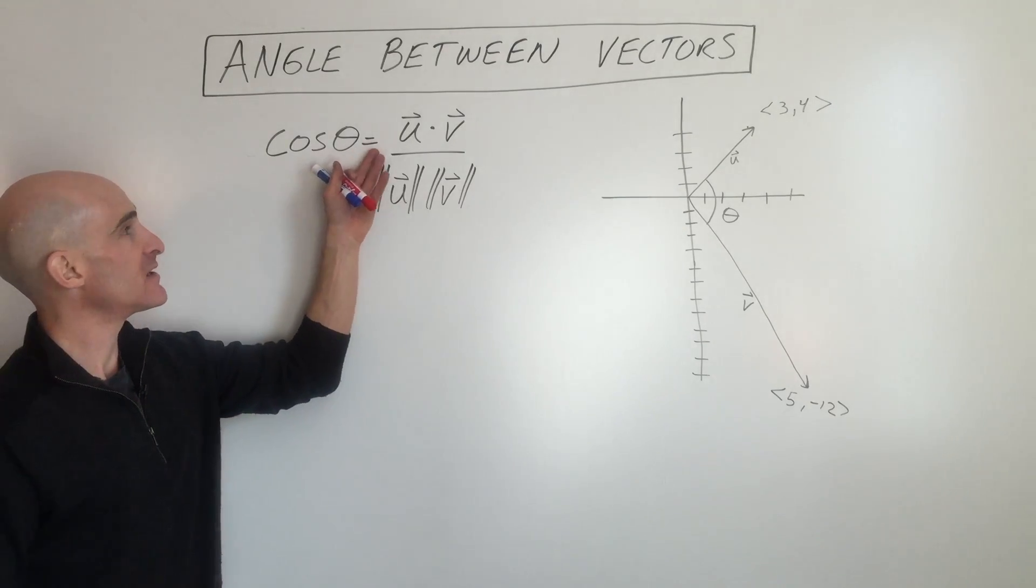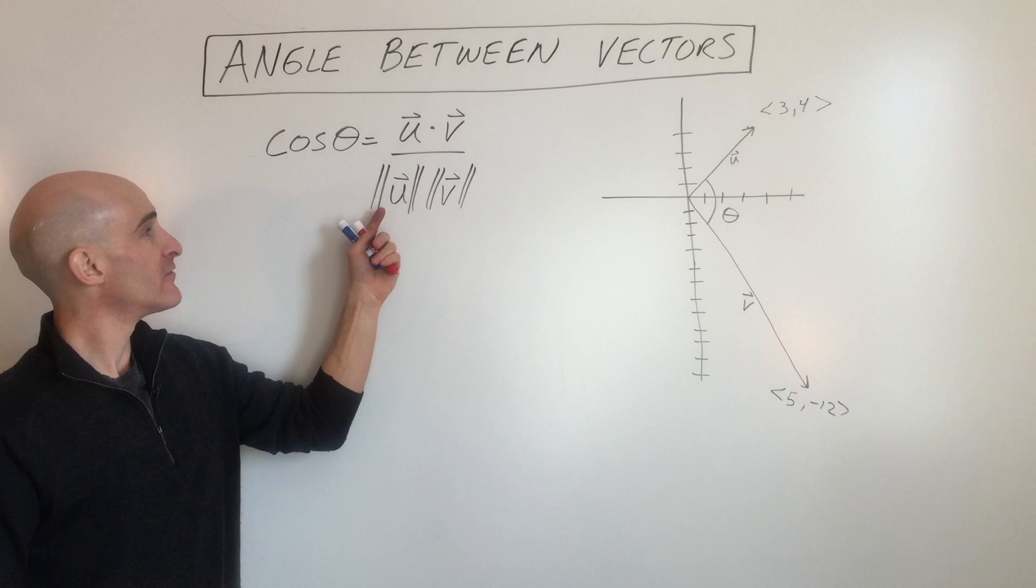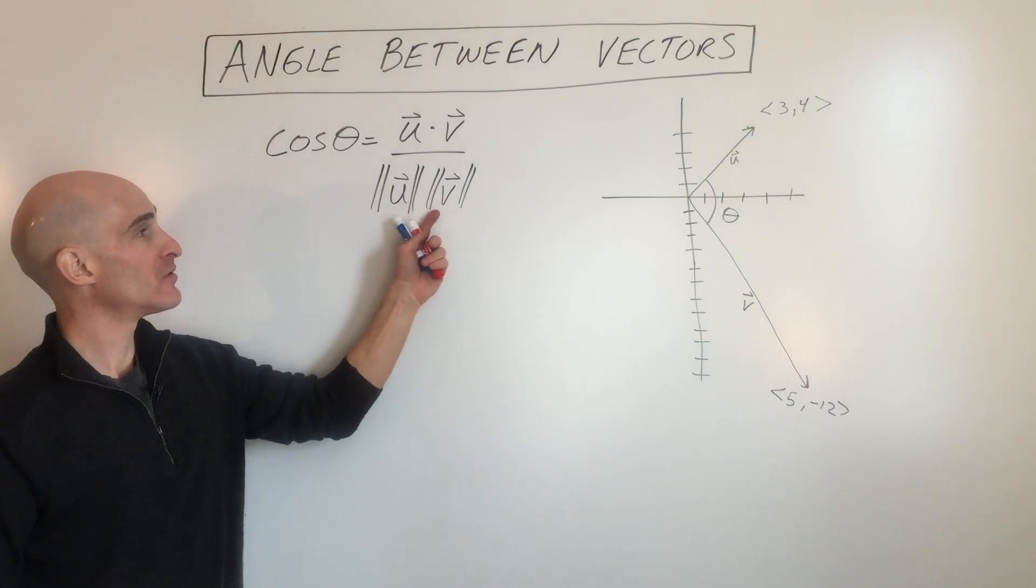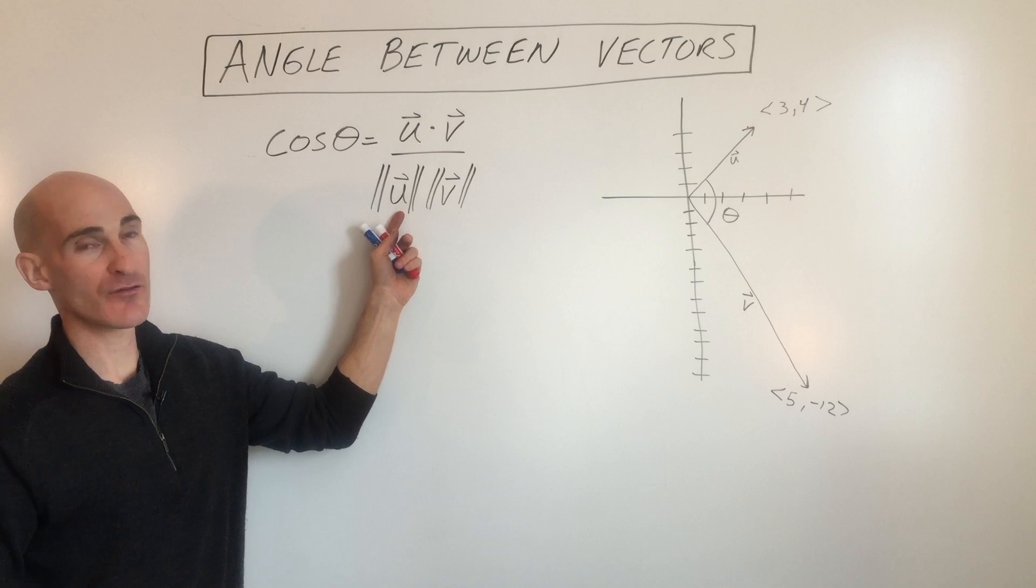The formula we'll be using is cosine theta equals u dot v, so that's the dot product of two vectors, divided by the magnitude of u times the magnitude of v. The magnitude just means the length of the vector.